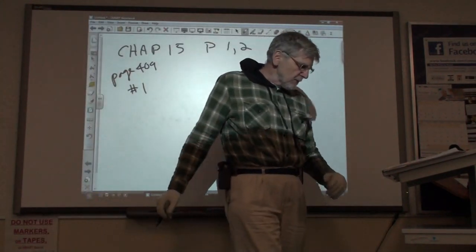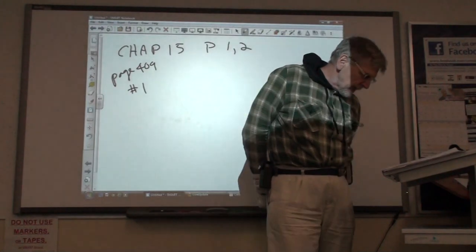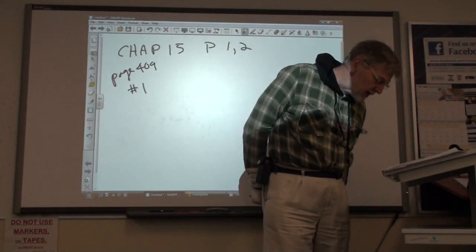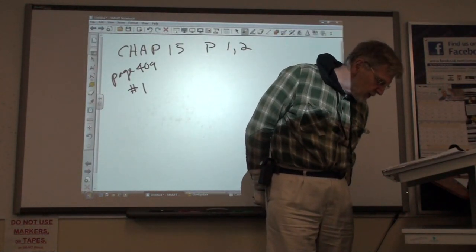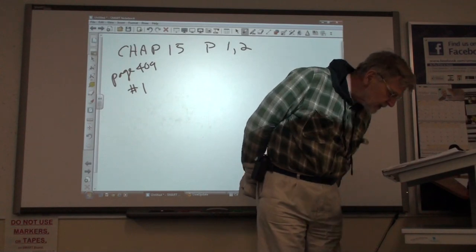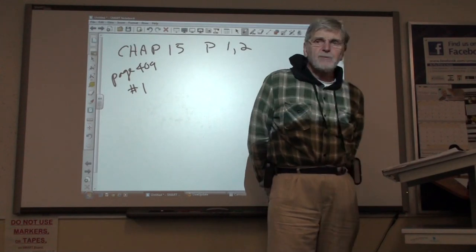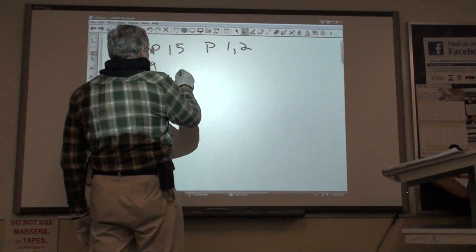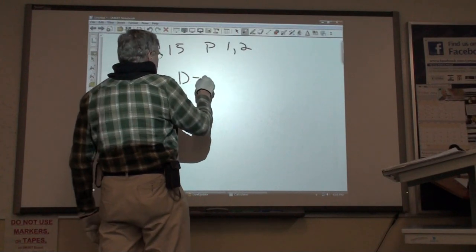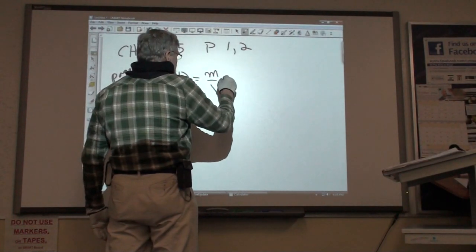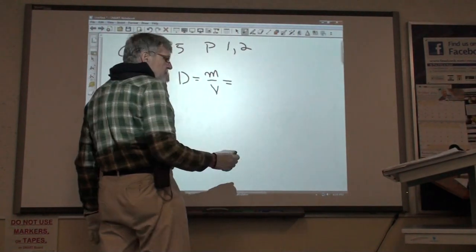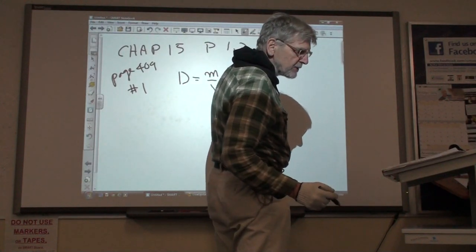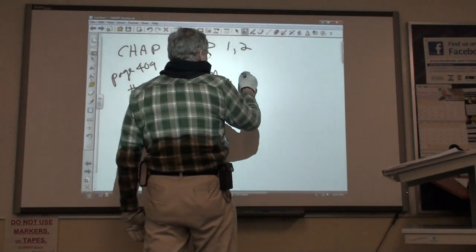A reading of the problem: Calculate the density of a white dwarf star of one solar mass that has a radius of 10 to the 4th kilometers. Density is equal to mass over volume. And if it's one solar mass, the mass of the Sun is 2 times 10 to the 30th kilograms.